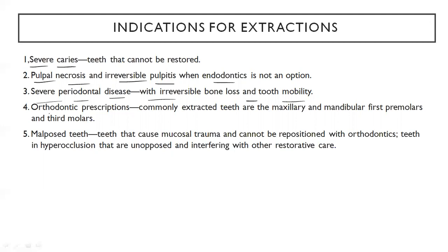Now coming to orthodontic prescriptions. For example, in one patient going for ortho treatment, the lower arch was fine but they had to extract upper arch maxillary first premolars to correct a class two situation. Usually it is maxillary first premolars, then mandibular first premolars and also third molars, but most cases involve maxillary and mandibular first premolars depending on the type of malocclusion.